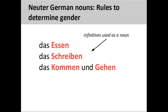All infinitive verbs used as a noun — which requires the first letter of the verb to be capitalized — will be neuter. Essen meaning food, Schreiben meaning document or writing, and das Kommen und Gehen, the act of coming and going, are all neuter.